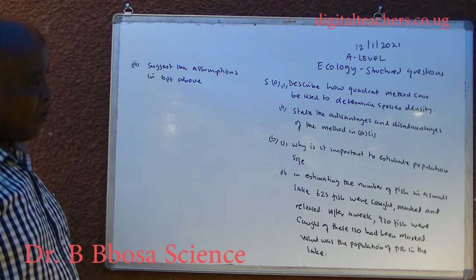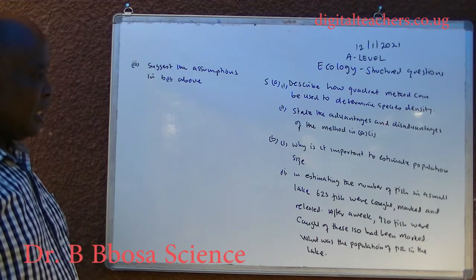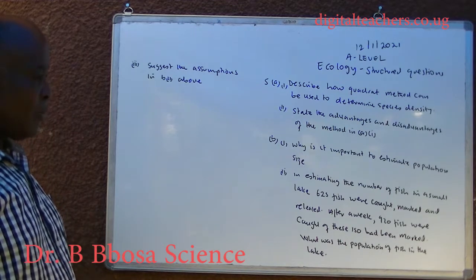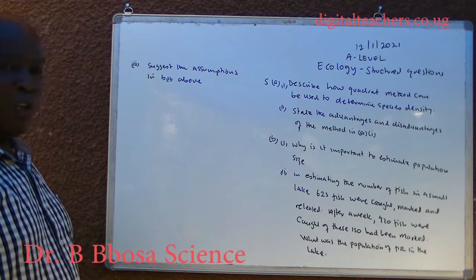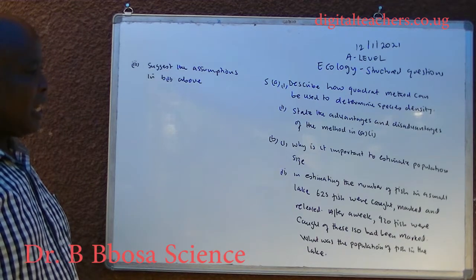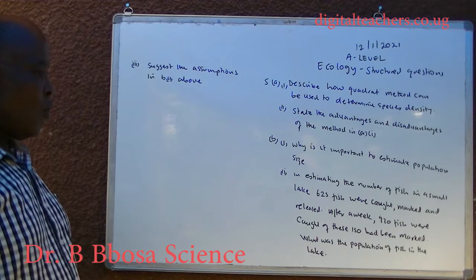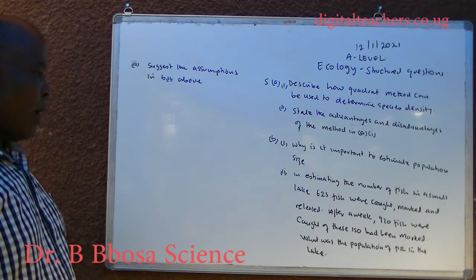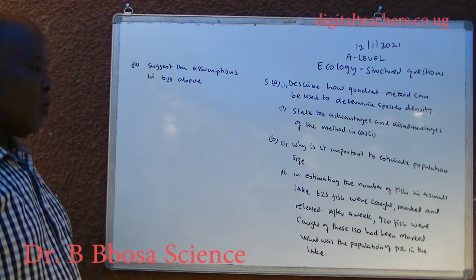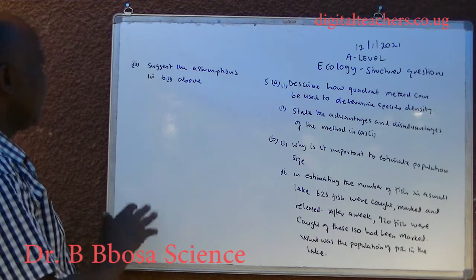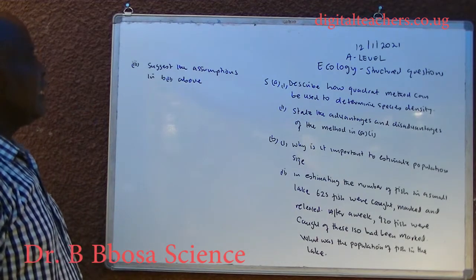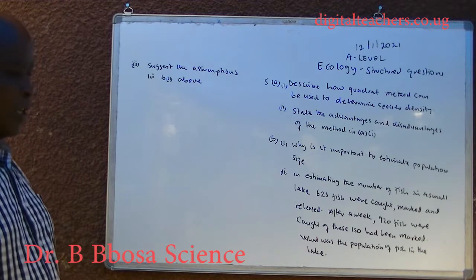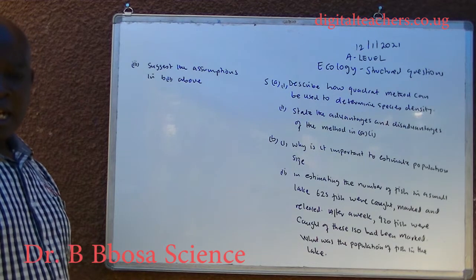Part two, in estimating the number of fish in a small lake, 625 fish were caught, marked and released. After a week, 920 fish were caught, of which 150 had been marked. What was the population of fish in the lake? Part three, suggest the assumptions in B2 above. You can pause and answer.